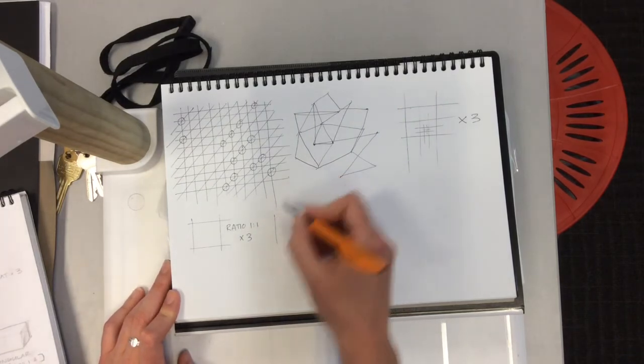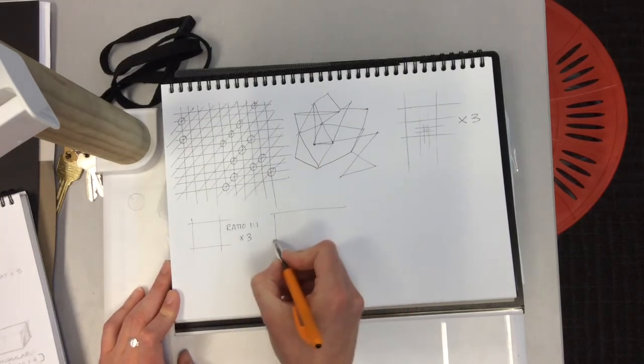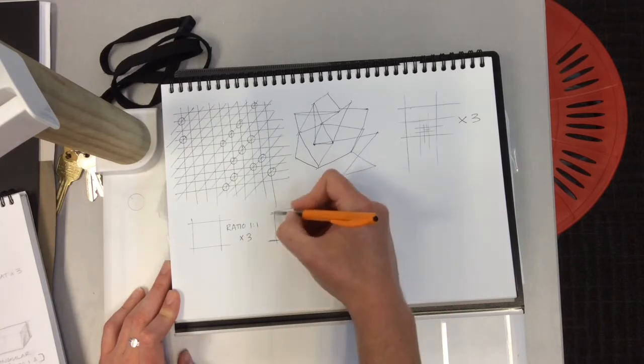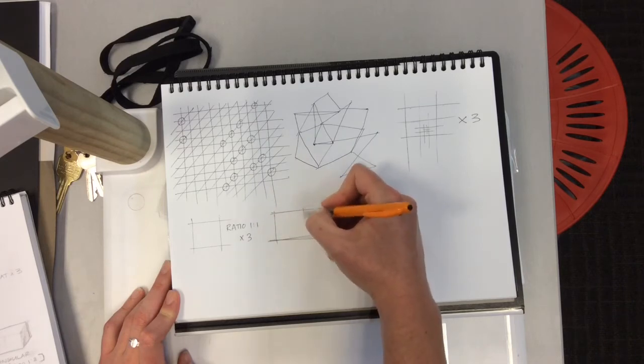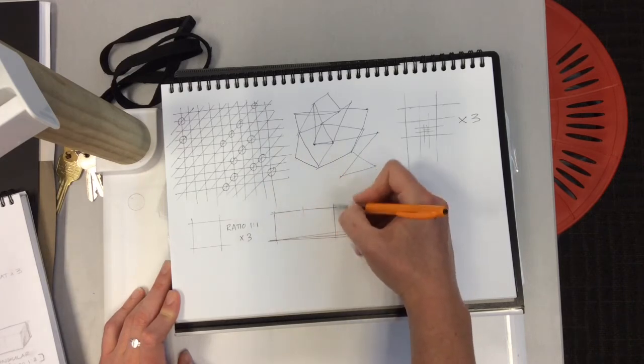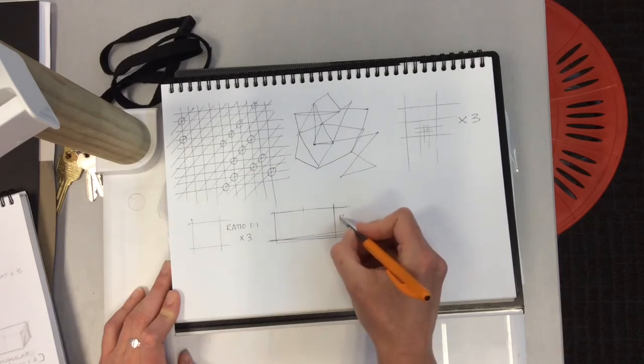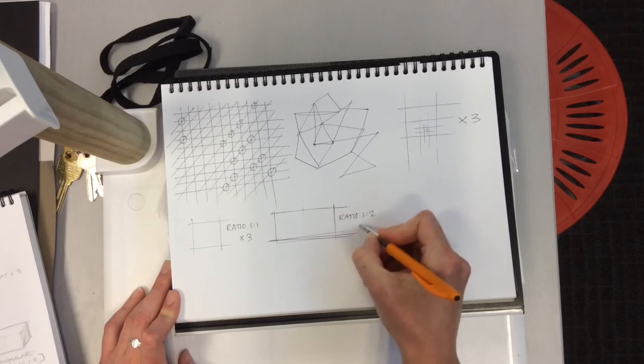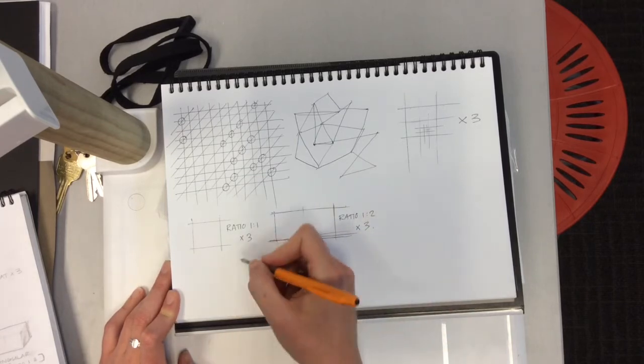Then you're going to try ratio 1:2, trying to get those lines nice and parallel. You're going to mark out that measurement first, then mark it along a second time to get that ratio 1:2. Do that three times on your page.